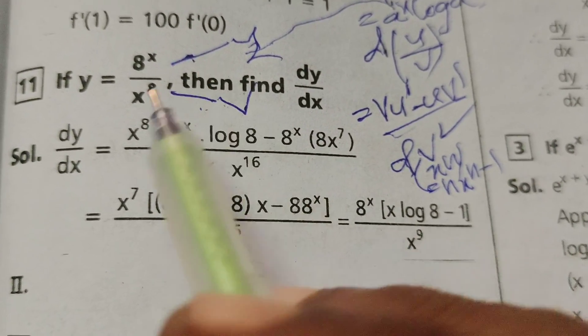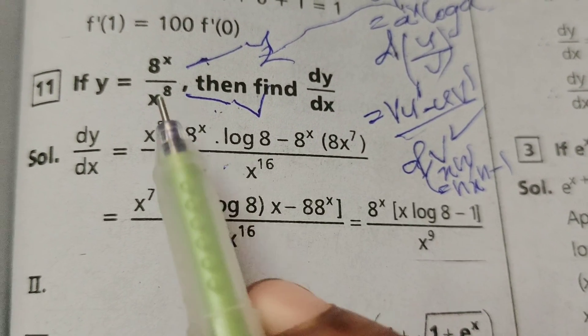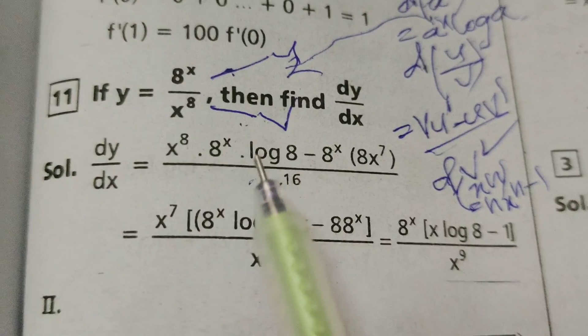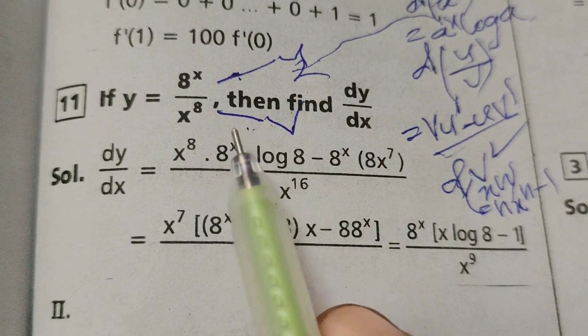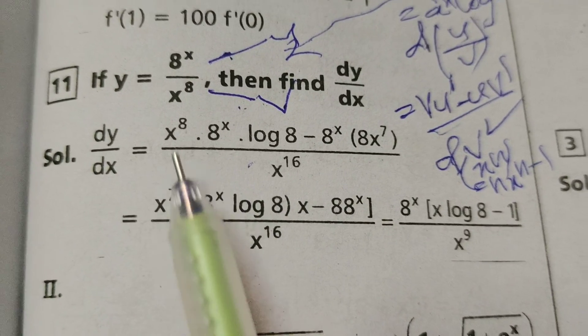Therefore, here 8 into x power 8 minus 1, that is 8 into x power 7, by here v square formula, x power 8 whole square, that is x power 16. Therefore, in these two terms,